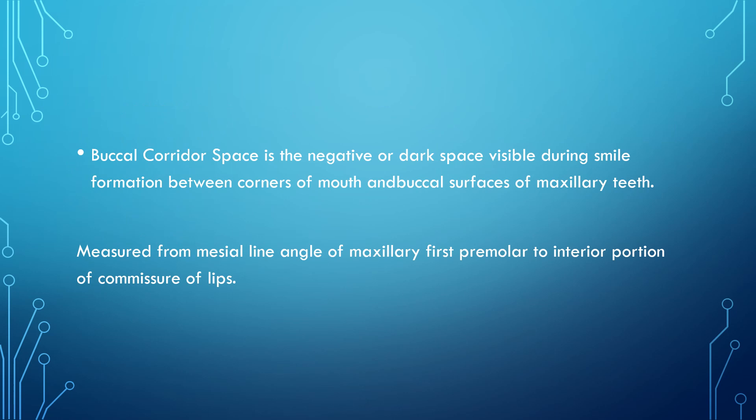The buccal corridor space is a negative or dark space visible during smile formation between the corners of the mouth and the buccal surface of the maxillary teeth. It is measured from the mesial line angle of the maxillary first molar or first premolar to the anterior portion of the commissure of the lips. It determines smile attractiveness — too little or too much is unattractive — and is considered in orthodontic treatment; if excessive, it can be reduced by expansion of the maxillary arch.